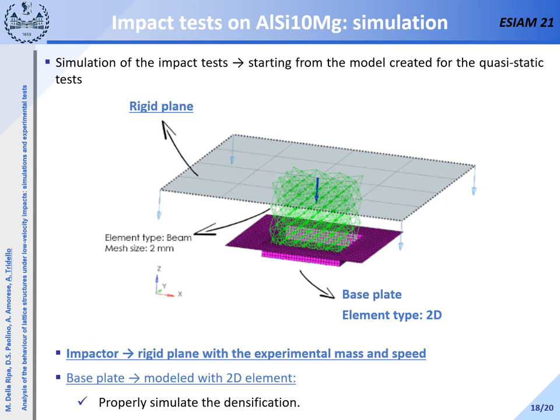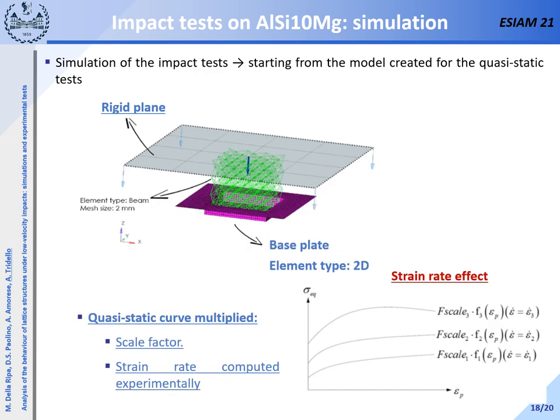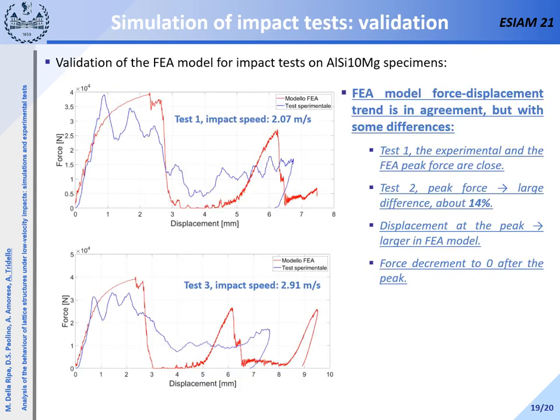Thereafter, the impact response of the lattice structure has been simulated using the Altair suite and the solver Radioss, starting from the model used for simulating the quasi-static compression test. The impactor has been modeled with a rigid plate with the same experimental mass and speed. The base plate has been modeled with 2D elements to properly simulate densification. Moreover, in order to properly model the strain rate effect, a first simple model implemented in the material curve has been considered. This model involves shifting the quasi-static curve by a scale factor multiplied by the strain rate computed experimentally.